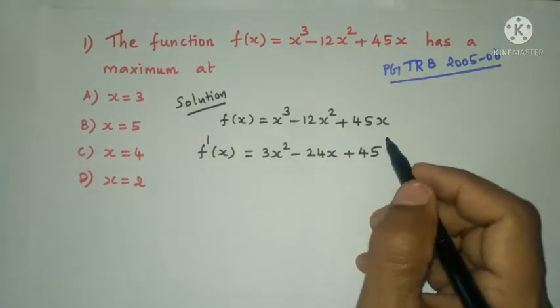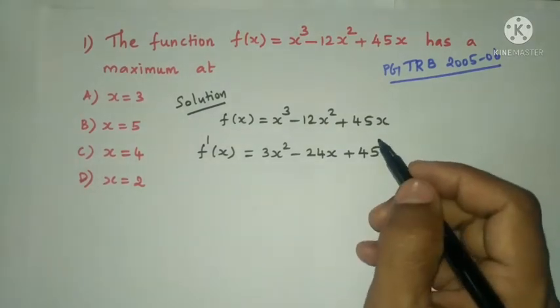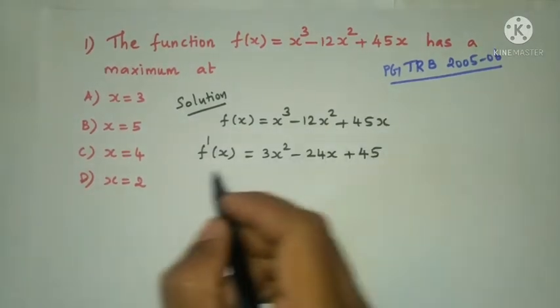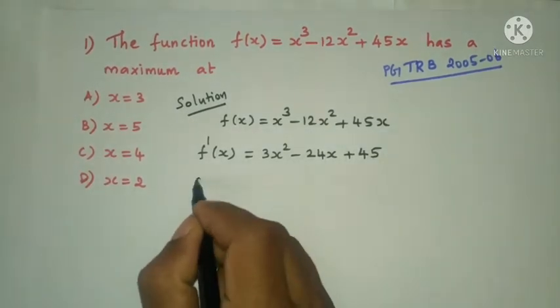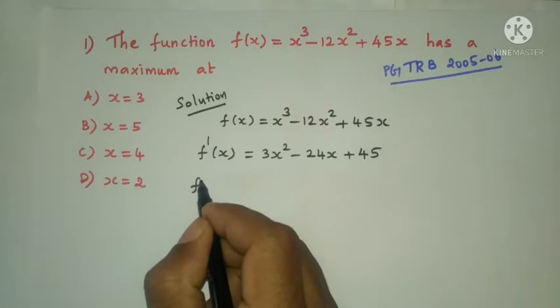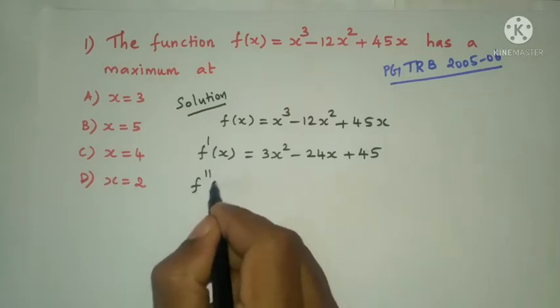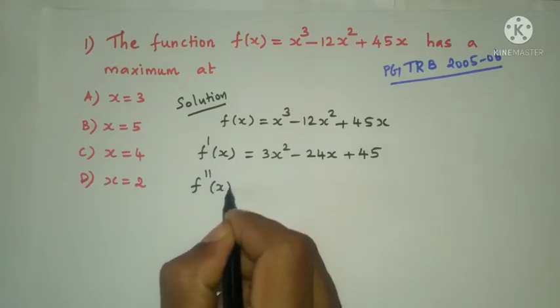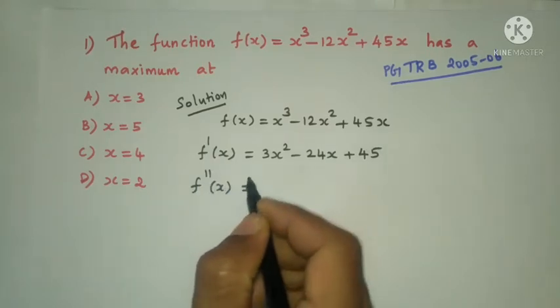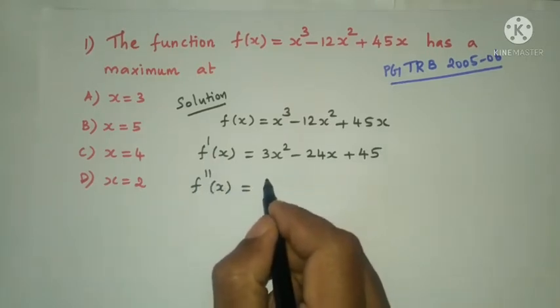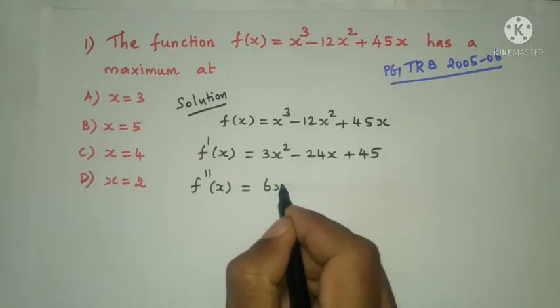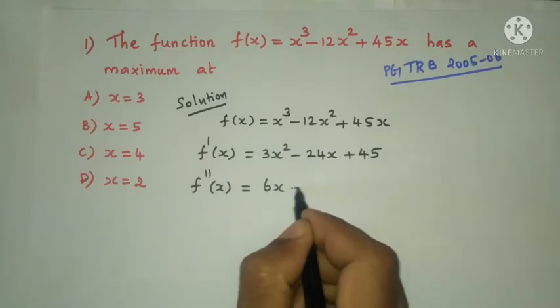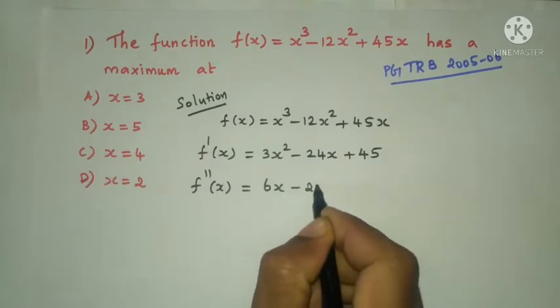Now we differentiate a second time: f''(x) is equal to 6x minus 24.